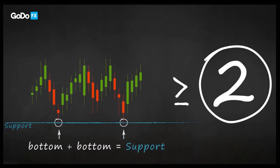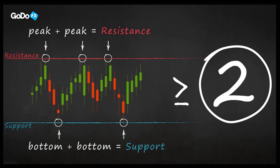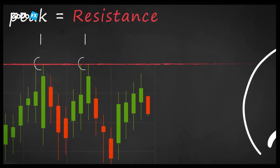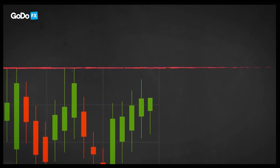Connect two or more peaks, and what you have now is the so-called resistance line. Easy, right? Both lines keep the movement of the price within a range for a certain period of time, until the price is strong enough to make a break.